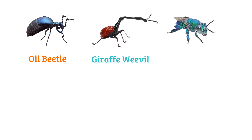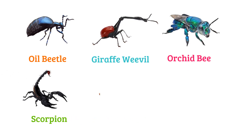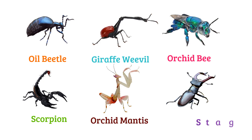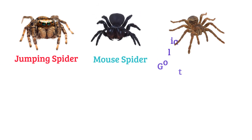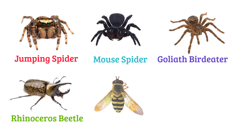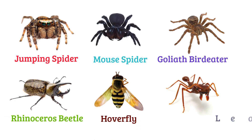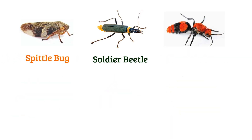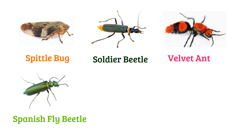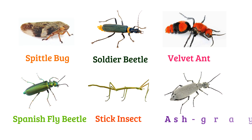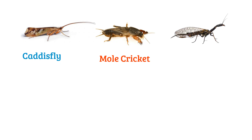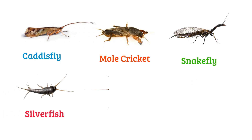Thorn bug, whale beetle, giraffe weevil, orchid bee, scorpion, orchid mantis, stag beetle, rhinoceros beetle, hoverfly, leafcutter ant, spittle bug, shoulder beetle, velvet ant, Spanish fly, stick insect, gray blister beetle, caddis fly, mole cricket.